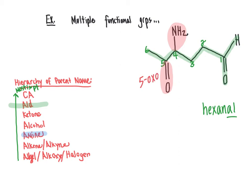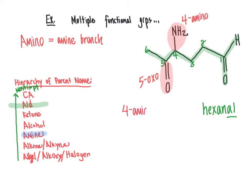When a ketone group is named as a branch, we call it an oxo group, so this is a 5-oxo group. New information here: if we have an amine branch, amine branches are referred to as amino groups. So if the amine group doesn't form the parent name because it's not highest in the hierarchy, it is named as an amino branch. At position four, we have 4-amino. Putting these in alphabetical order, the complete name is 4-amino-5-oxohexanal. There is one stereocenter at position four, but since no wedges or dashes are shown, we cannot assign R or S.